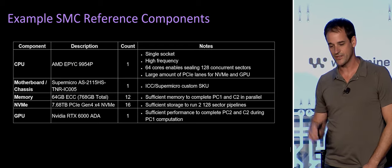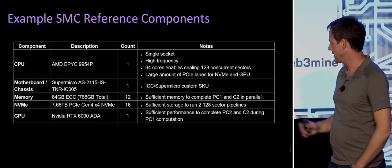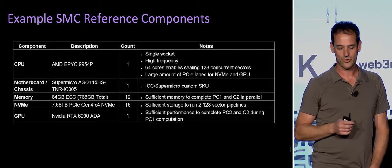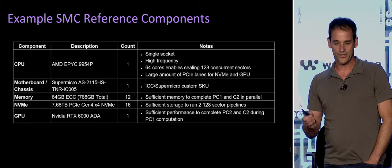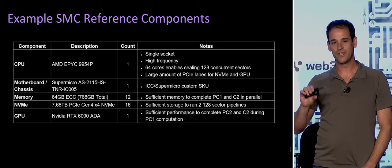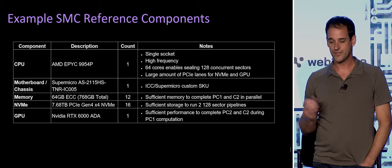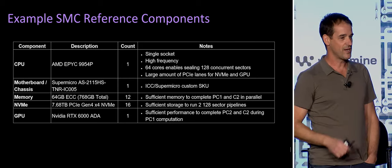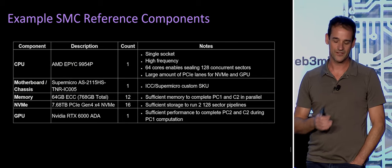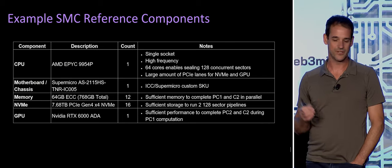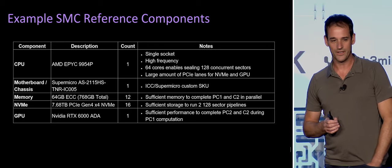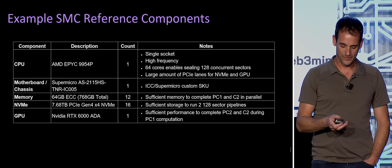Looking at the actual concrete reference architecture from Supermicro: it has a 64-core CPU, 768 gigabytes of memory — which allows simultaneous C2 operations — and 16 NVMe drives. That gives us the necessary IOPS to do PC1; we need about 10 million IOPS to keep up with the core hashing. And we have one GPU, an NVIDIA RTX 6000 Ada, which is a pretty high-end GPU, but as you'll see in the performance numbers, it pays off.